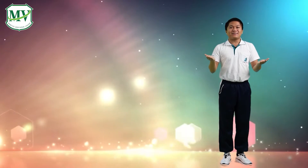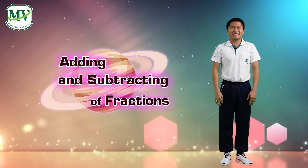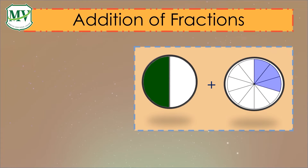We will talk about adding and subtracting fractions. Please look at exercise 1 letter A. We will add fractions 1 over 2 and 3 over 10 as represented by the pie charts. The two fractions do not have the same denominators. In adding fractions, make sure the denominators are the same by finding their LCM. The LCM of 2 and 10 is 10.